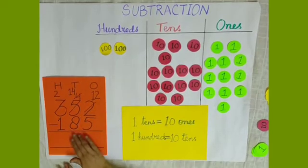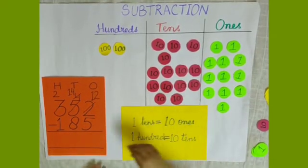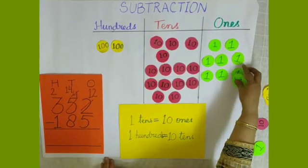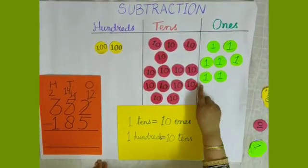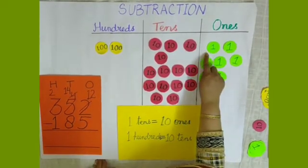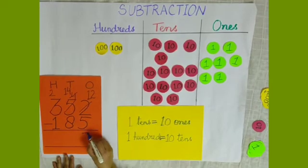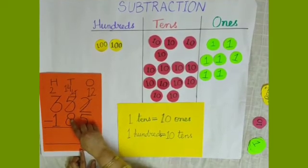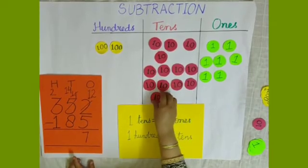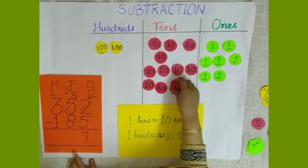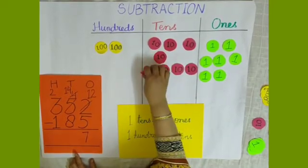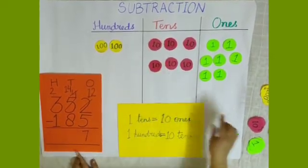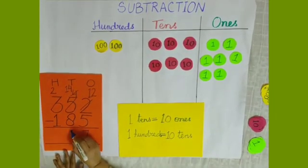We have to take away 5 ones, and we are left with 7 ones. In the 10s column we have to take away 8 tens from 14 tens: 1, 2, 3, 4, 5, 6, 7 and 8. Now we are left with 6 tens. So 14 minus 8 is 6.